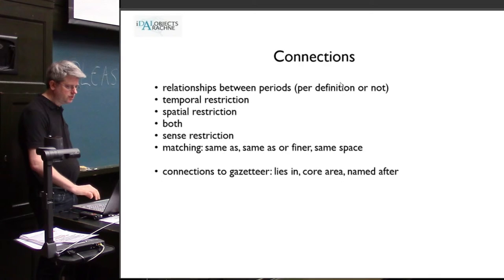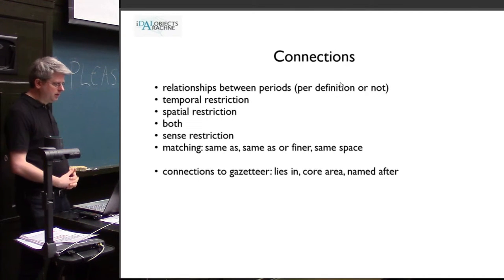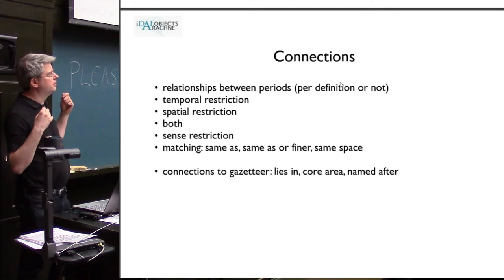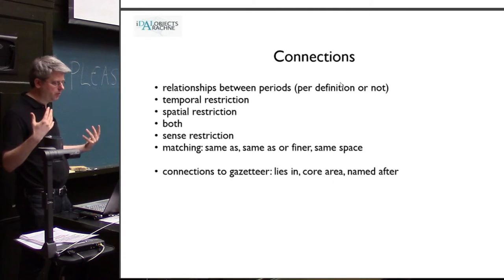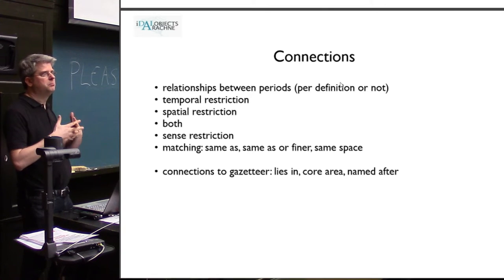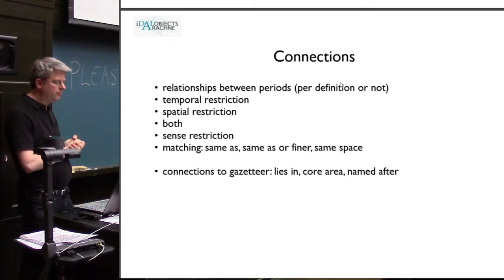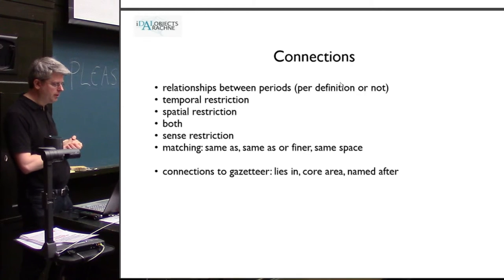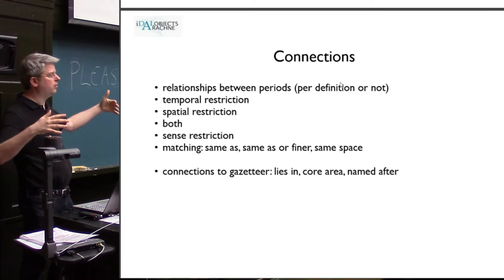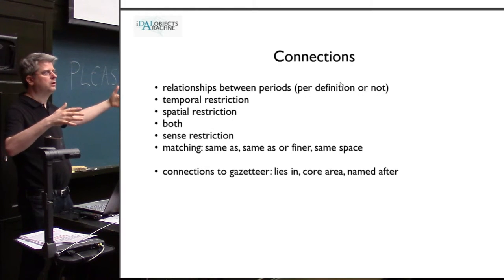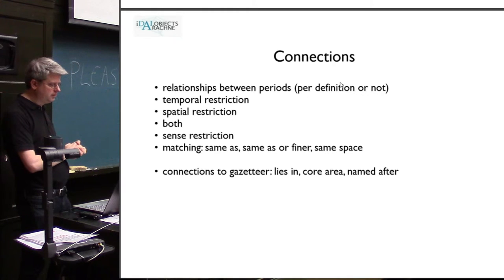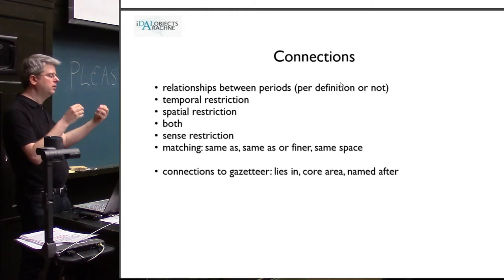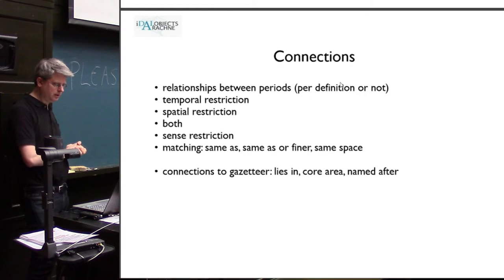We have connections between different datasets. There are relationships that exist because of the definition — for example, 'Middle Augustan' is by definition a part of 'Augustan.' We have things that are connected more or less by chance. And even though we always talk about space-time volumes, we have temporal restrictions, spatial restrictions, or both, and also sense restrictions — for instance, 'all meanings' might be restricted to 'Augustan' in the political sense. We can have different kinds of matching for how terms might be the same or nearly the same.